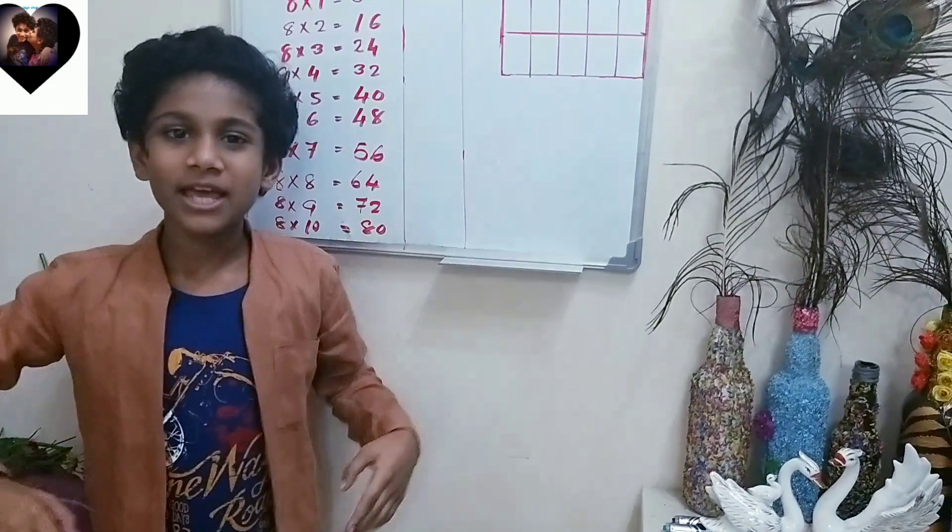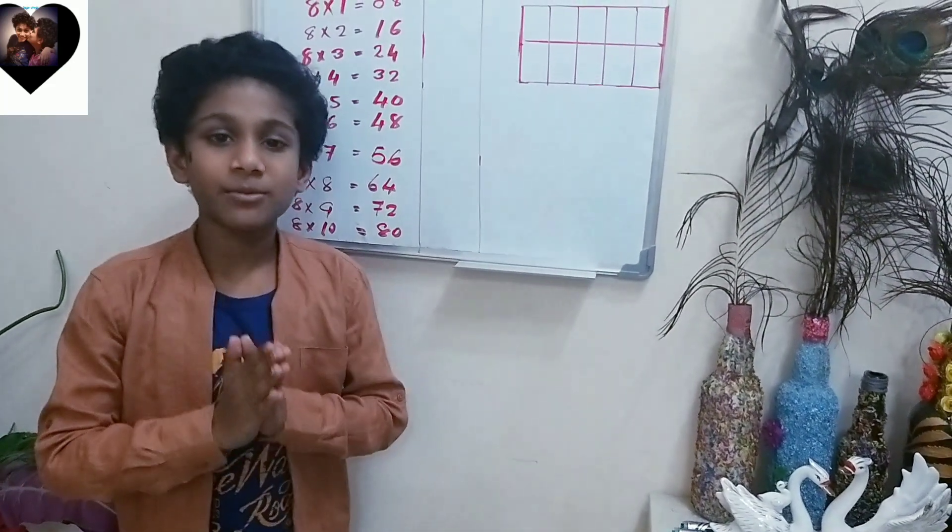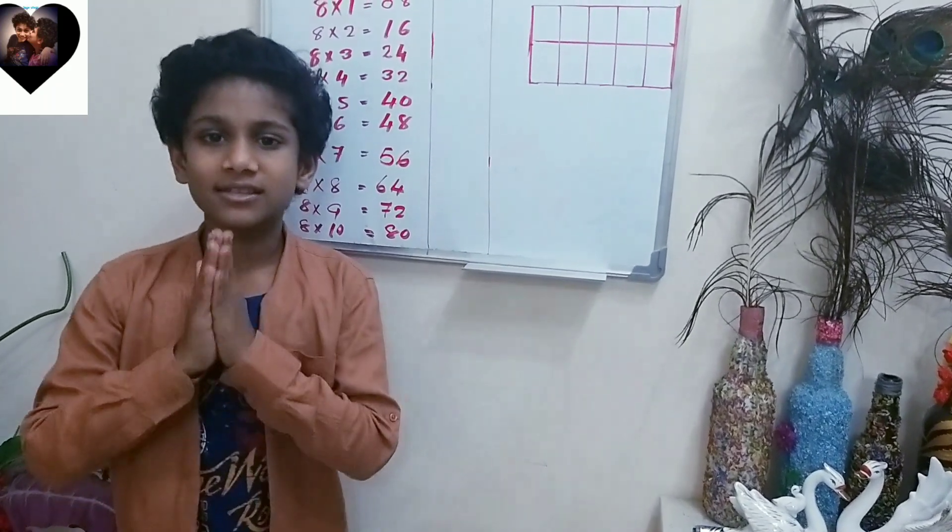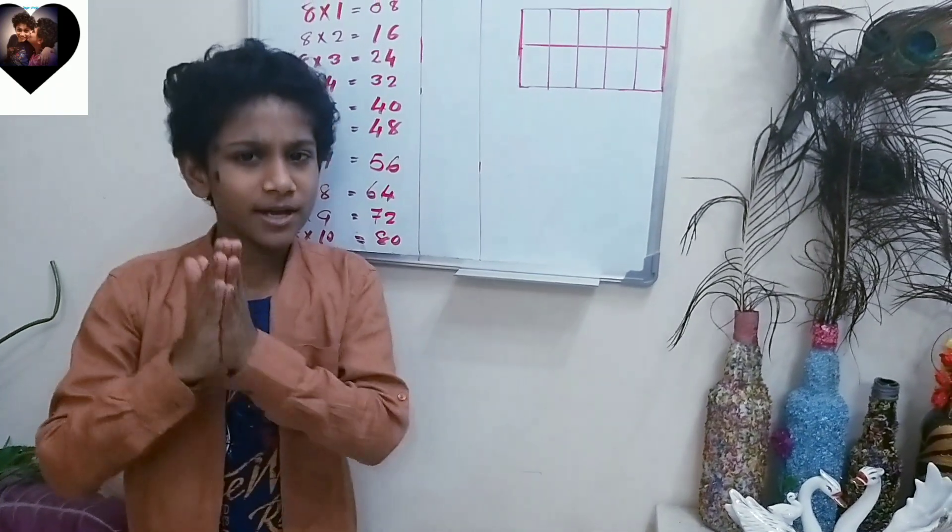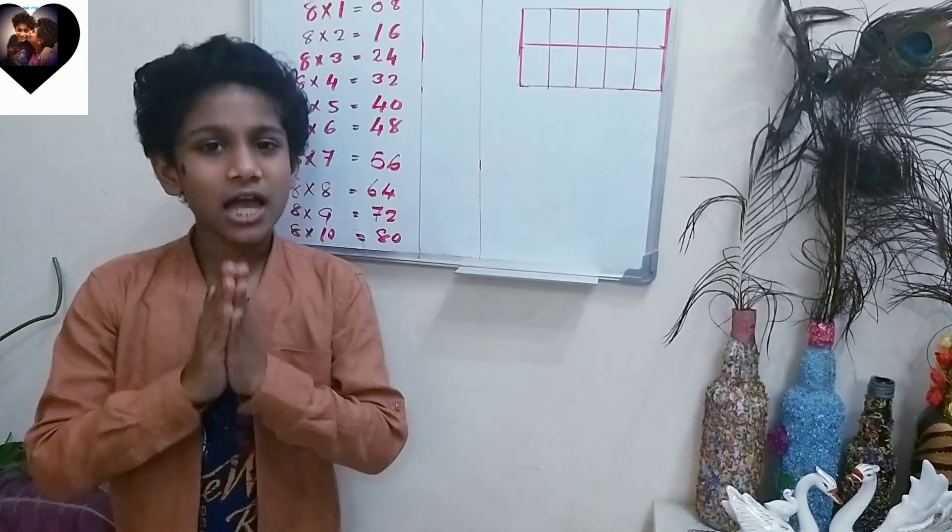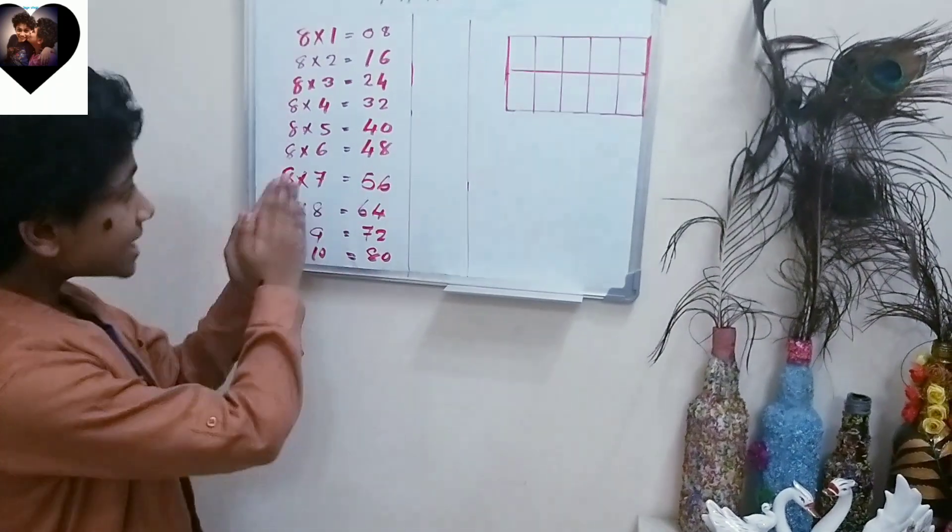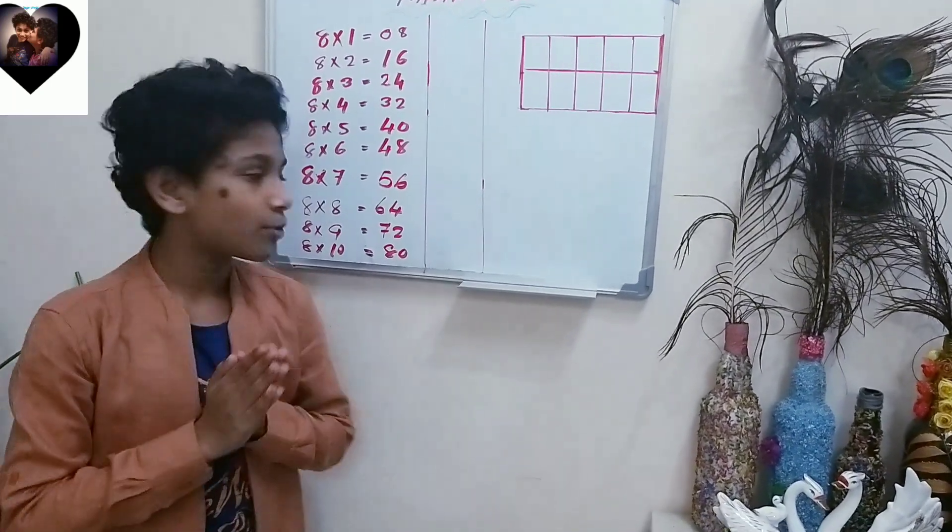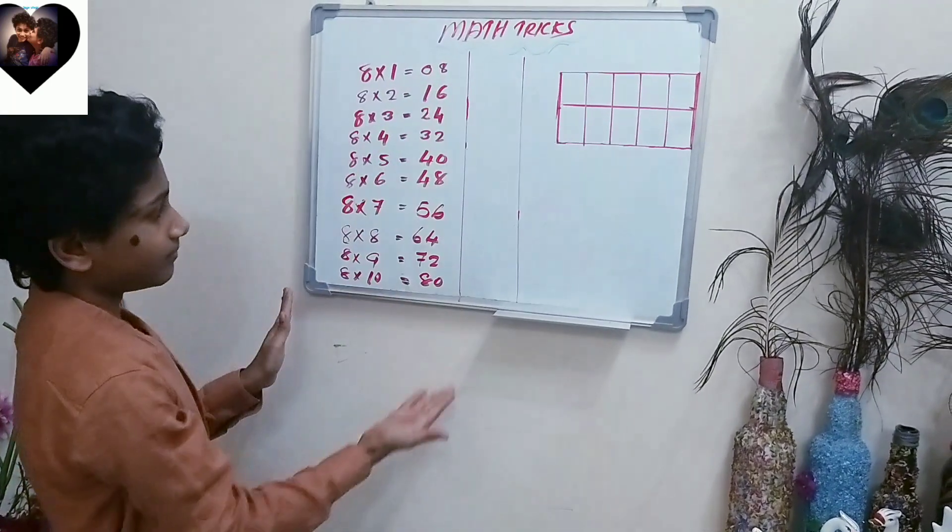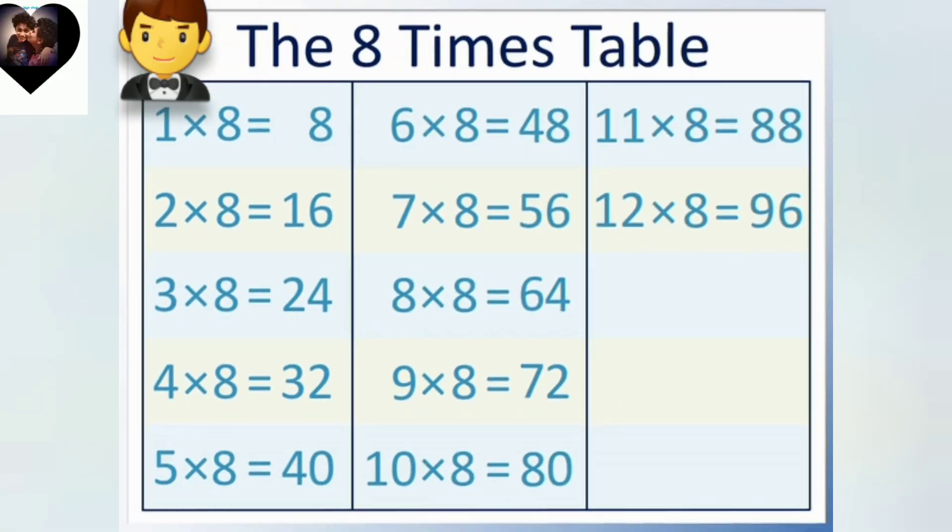After the 9 times table, the 8 times table is really hard, not as hard as the 9 times table, but still hard. So I'm going to be showing you guys how to find the 8 times table really easily. If you guys want, you can pause the video and read this: 1×8=8, 2×8=16, 3×8=24, 4×8=32, 5×8=40, 6×8=48, 7×8=56, 8×8=64, 9×8=72, 10×8=80.